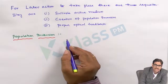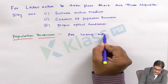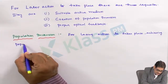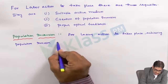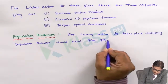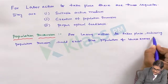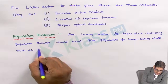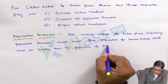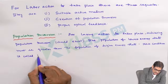Population inversion is understood as follows: for lasing action to take place, population inversion should exist. We say that the population of the lower energy state must be greater than the population of the higher energy state. This condition is called population inversion.